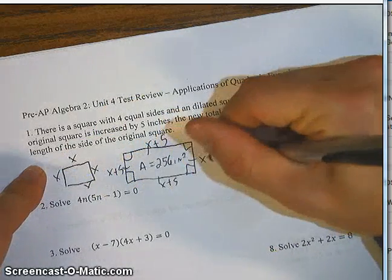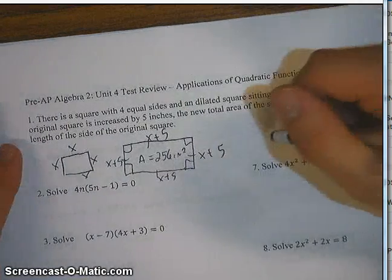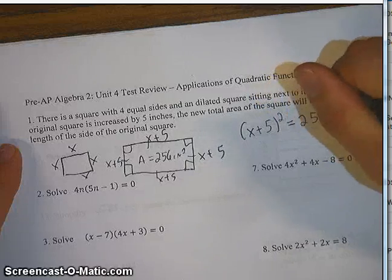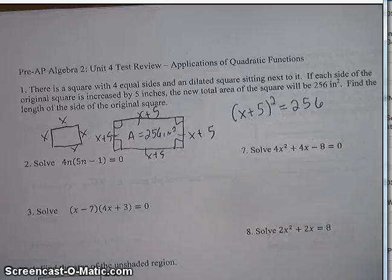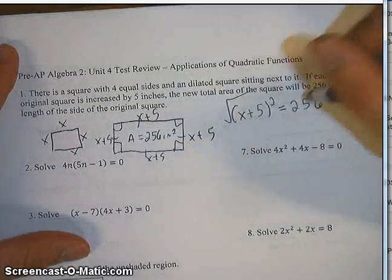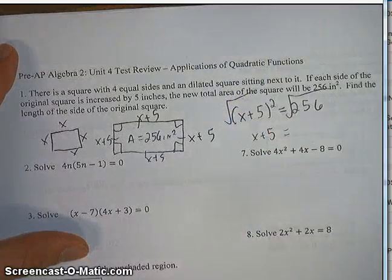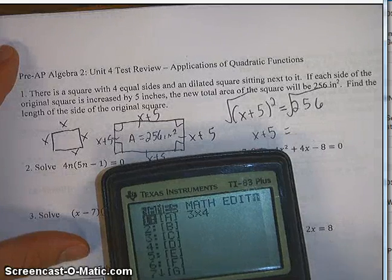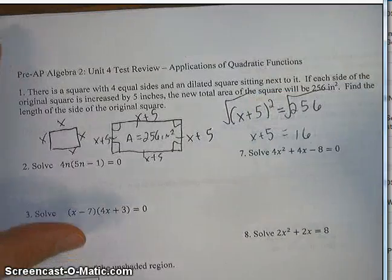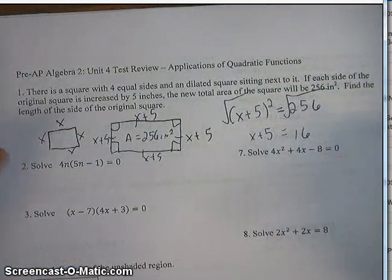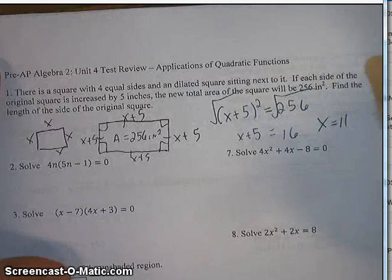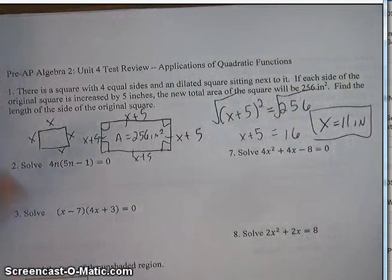Since this is a square, all four sides are the same. To find the area, you simply take one side and square it. We're told the area is 256, so we have (x+5)² = 256. Taking the square root of both sides gives x plus 5 equals 16. Since we can't have a negative side length, we use positive 16. Subtracting 5 from both sides gives x equals 11 inches. So the answer is x equals 11.